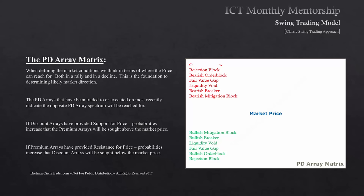Look at old highs or any historical lows that were below, and old lows or any historical highs that were above. Framing the PD arrays above market price is the premium spectrum, and the arrays below market price is the discount spectrum. You do this on the monthly, weekly, daily, and four-hour the same way. Every array above market price is the premium spectrum; every array below current market action is the discount spectrum. This is the PD array matrix.